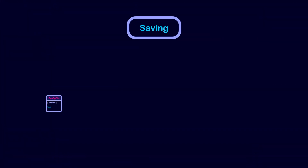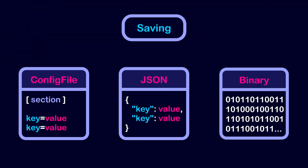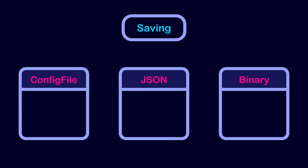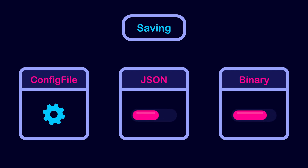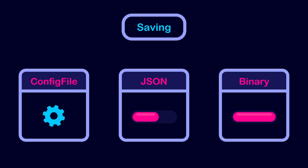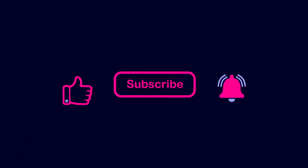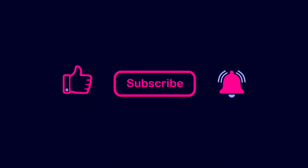So far, we have covered three common ways to save games in Godot. But when should we use one over the other? Config file is ideal for saving game settings and configurations. JSON is ideal for saving data in small to medium sized games. Binary serialization is ideal for larger games where smaller file sizes is crucial. That's all for this video. I hope you enjoyed it.